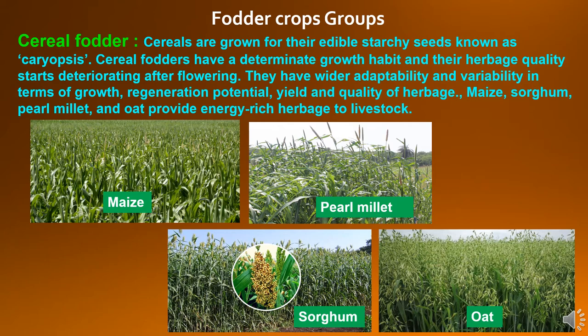First one is cereal fodder. Cereals are grown for their edible starchy seeds known as caryopsis. Cereal fodders have a determinate growth habit and their herbage quality starts deteriorating after flowering. They have wider adaptability and variability in terms of growth, regeneration potential, yield and quality of herbage. Maize, sorghum, pearl millet and oat provide energy-rich herbage to livestock, which are falling under cereal fodder.